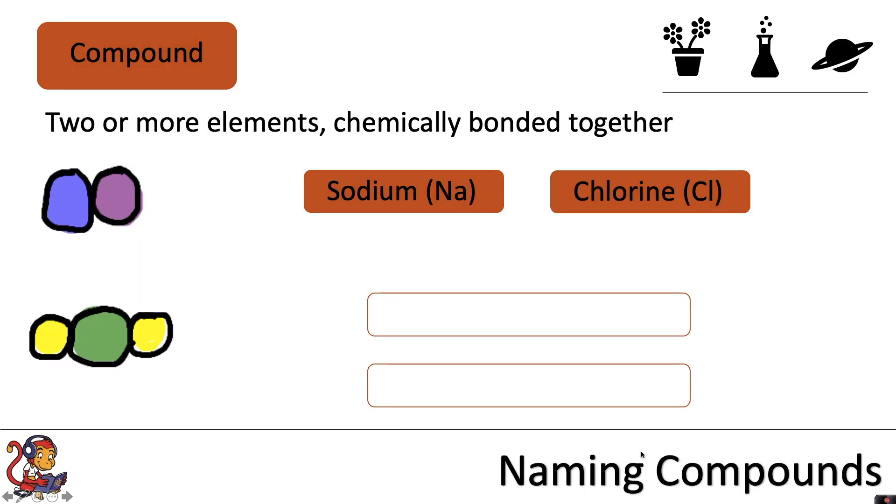The definition of a compound is two or more elements chemically bonded together. In this video we're going to learn about how to name compounds, and specifically we're going to look at compounds that end in the three letters I-D-E.